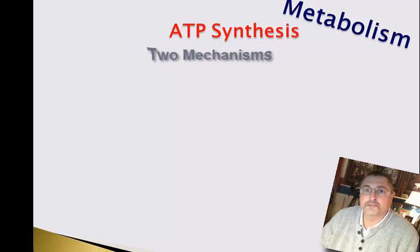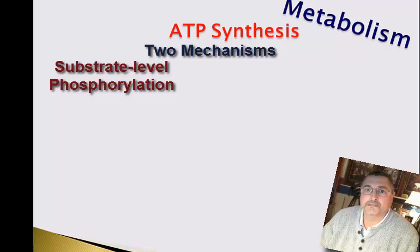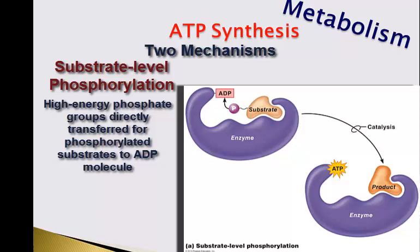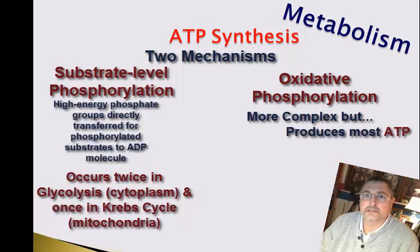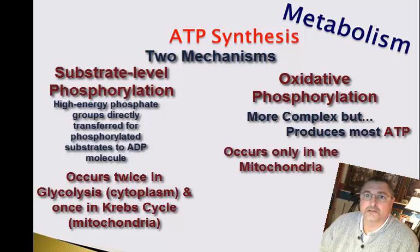ATP synthesis can occur one of two ways. First, substrate phosphorylation, which is simply a transfer of a phosphate group from a substrate molecule to the end of an ADP molecule to form ATP — this occurs in the cytoplasm and also a little bit in the Krebs cycle. Second, oxidative phosphorylation, which is a much more complex process that occurs exclusively in the mitochondria.